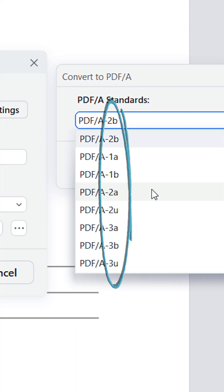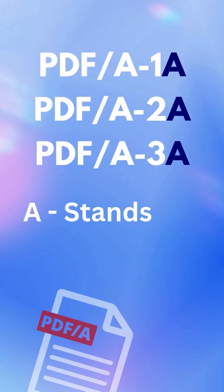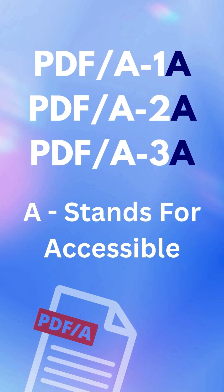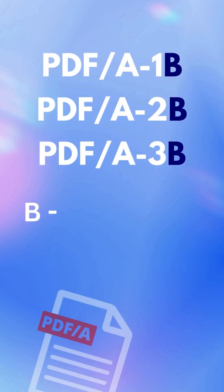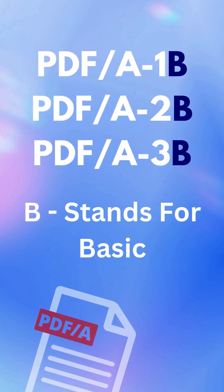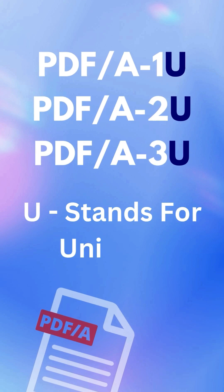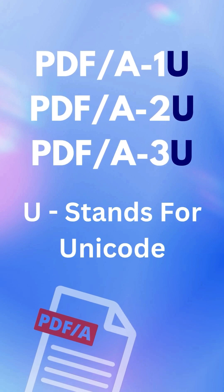Now you might wonder what the letters mean. A stands for accessible, great for readers with disabilities. B stands for basic, which just keeps the look consistent. U stands for Unicode, supporting various languages.